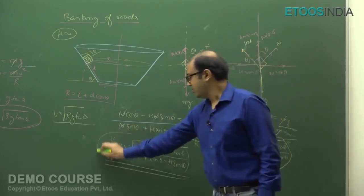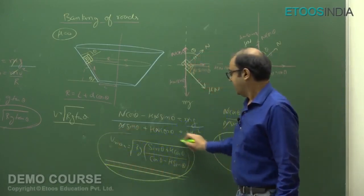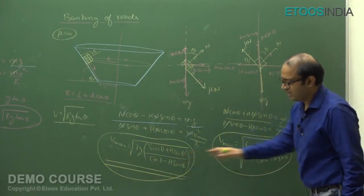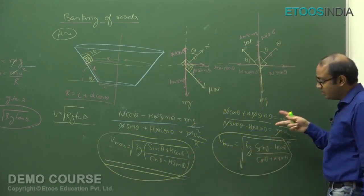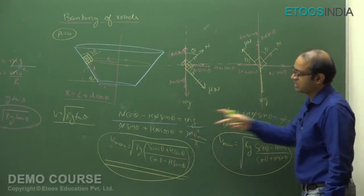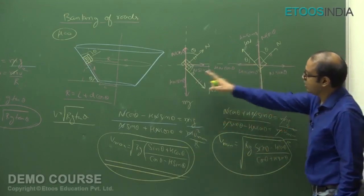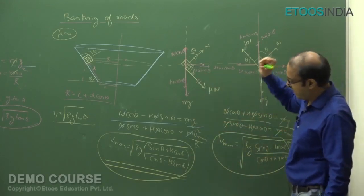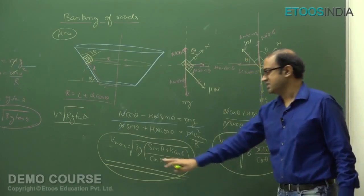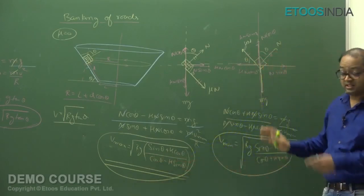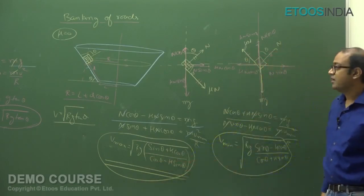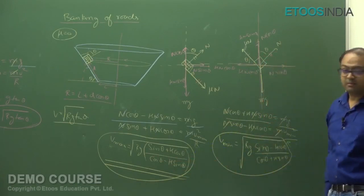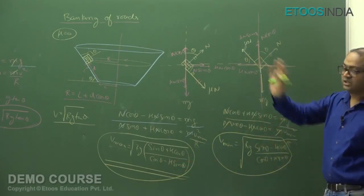These are not formulas to memorize — what's important is whether you can write the equations and draw the free body diagrams yourself. The range of velocities for which the particle keeps moving on the same circular path in the presence of friction is from v_min to v_max.